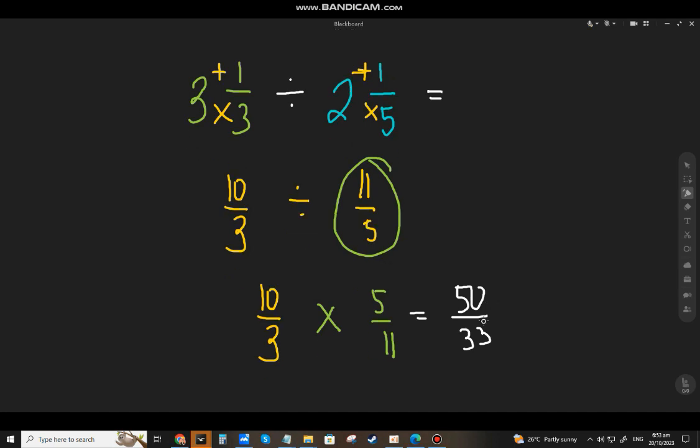10 times 5, that will be 50. 3 times 11, that will be 33. And that is already the lowest term, but sometimes the teacher wants a mixed number. Let's change it right now. Divide 50 by 33. There's one 33 in 50, so we have a remainder of 17.